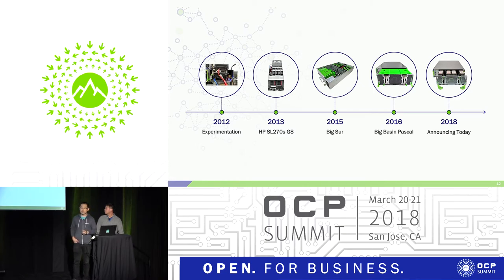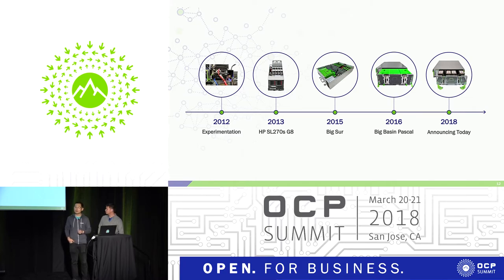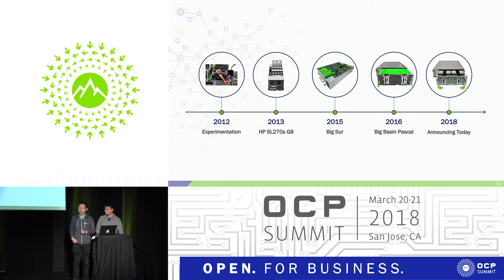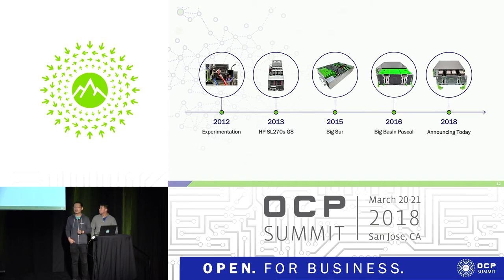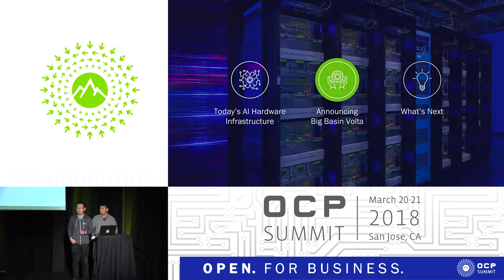Learning all these lessons, in 2015 we developed our first machine learning hardware platform, Big Sur, and contributed it to OCP. It was very well received by our data center. In 2016, we refreshed our machine learning hardware with Big Basin Pascal — our first generation disaggregated design of our machine learning hardware platform. And today, we are very excited to announce our next step of innovation: Big Basin Volta.